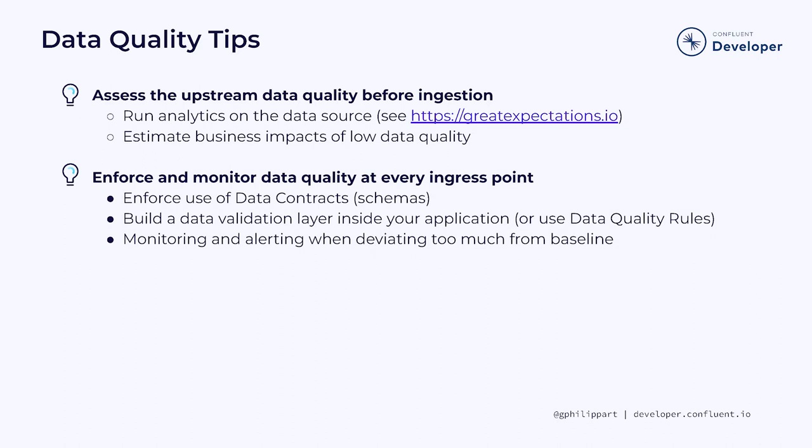To do that, you can enforce the use of schemas and build a data validation layer inside your application to ensure that the incoming data meets your standards. Confluent Cloud has built such a validation layer with declarative data quality rules, which come with a stream governance advance package. Monitoring and alerting can also be used to notify you when the data deviates too much from the baseline.